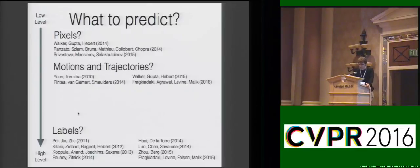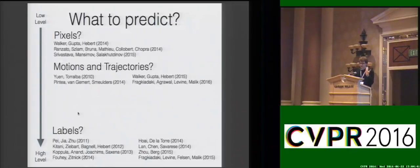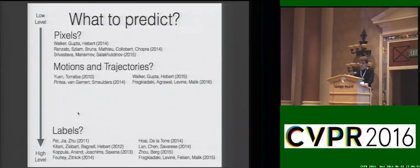Once you download this video, what should you try to predict? Previous works using unlabeled video have tried to predict raw pixels or motions, but these are very challenging and perhaps even unnecessary for high-level prediction. There has been previous work on making high-level predictions, but these have typically required lots of labeled data, which is expensive to scale. So the question is: is there something in between pixels and labels?